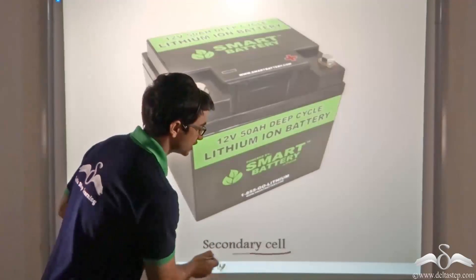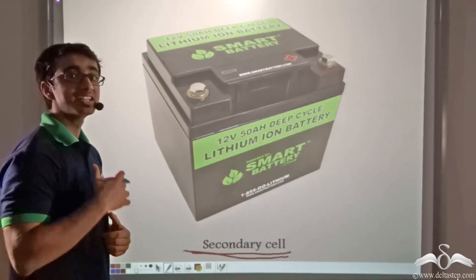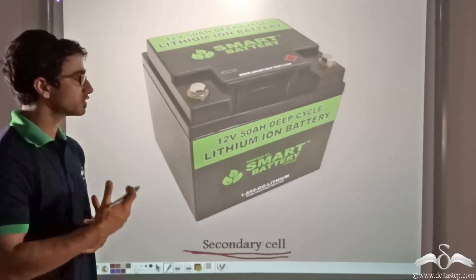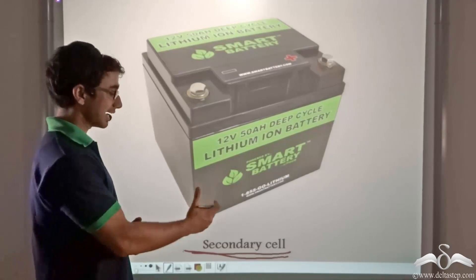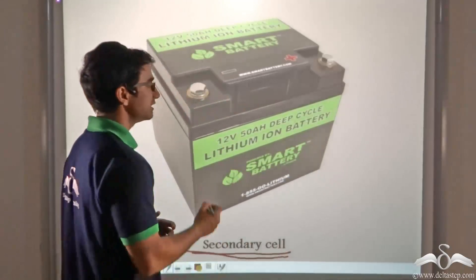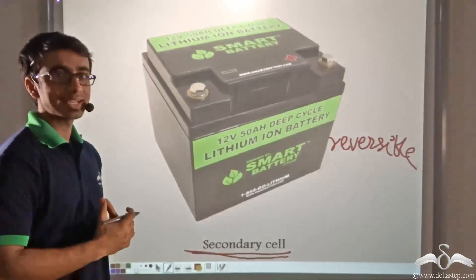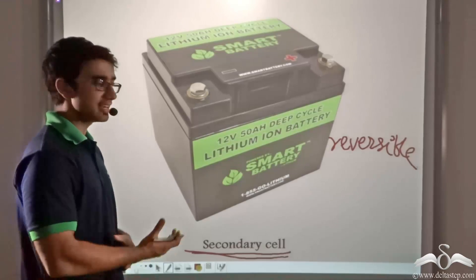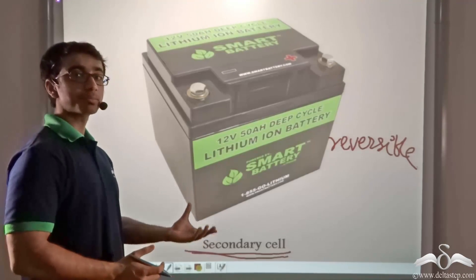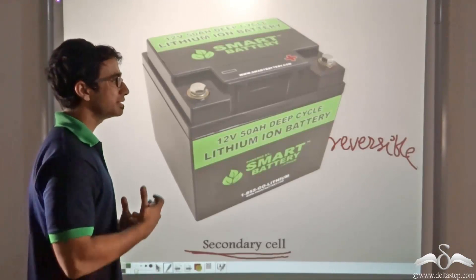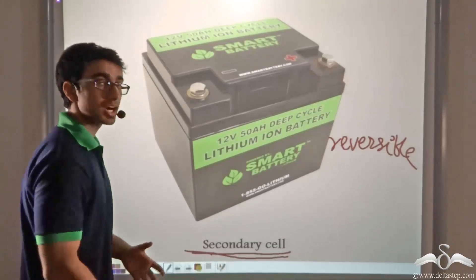Similarly, we have secondary cells, which are not of the use-and-throw type. You must have seen that the batteries which an inverter uses at your home are recharged after a certain period of use. This recharging is done with the help of some external source. In a secondary battery or secondary cell, the reaction that takes place in the electrolyte is reversible. That is, the oxidation and reduction process at the anode and cathode is reversible, because the nature of the electrolyte is such. Once the battery has been used up completely, you need not throw it away — it can simply be recharged and will go back to its previous state of being able to provide a potential difference. So secondary cells are not of the use-and-throw type.